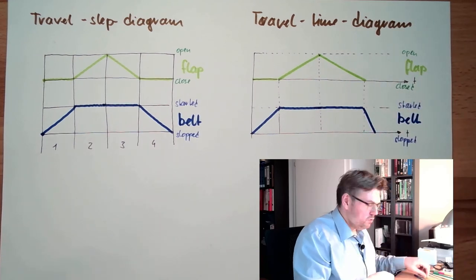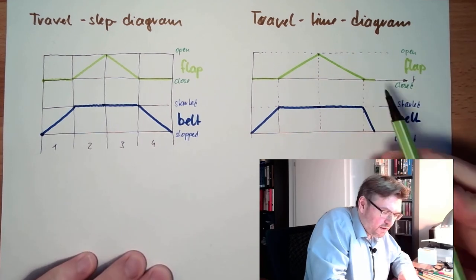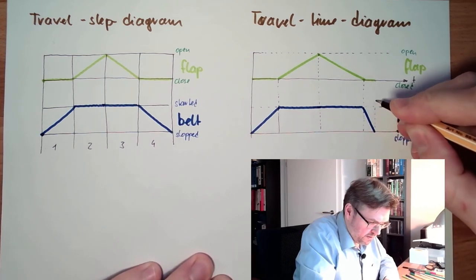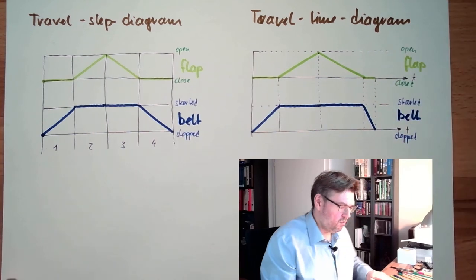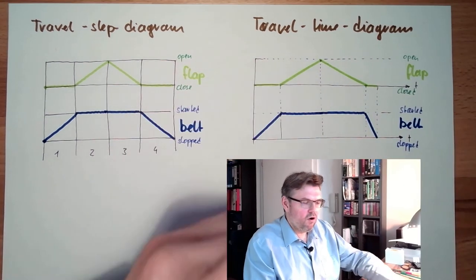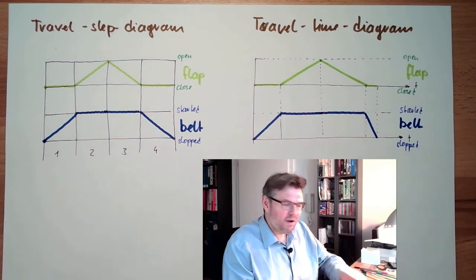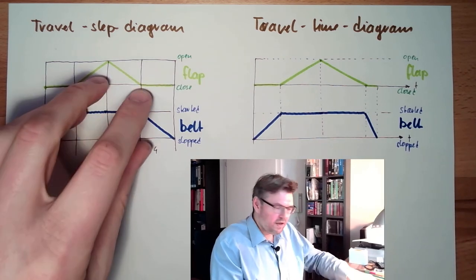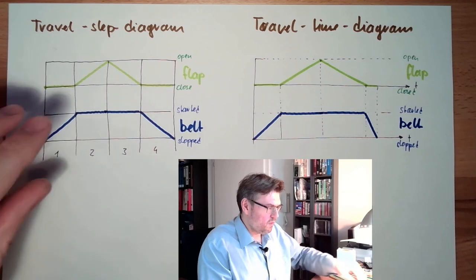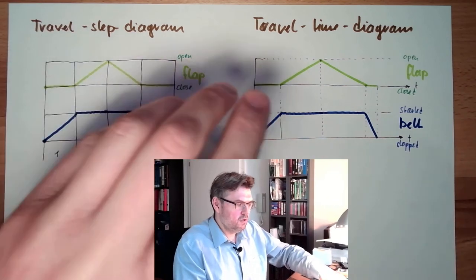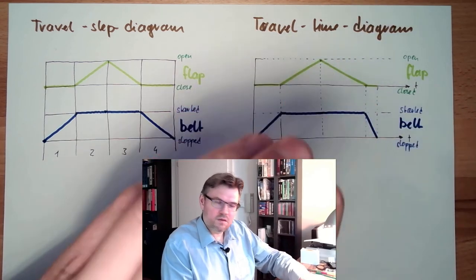Now we also have the timing of those things. That's an additional information. However, if we have a control system where there are a lot of different timing involved, then this might get not that obvious like here. Usual is the step diagram, pretty usual. Travel time diagram, it's not that usual.